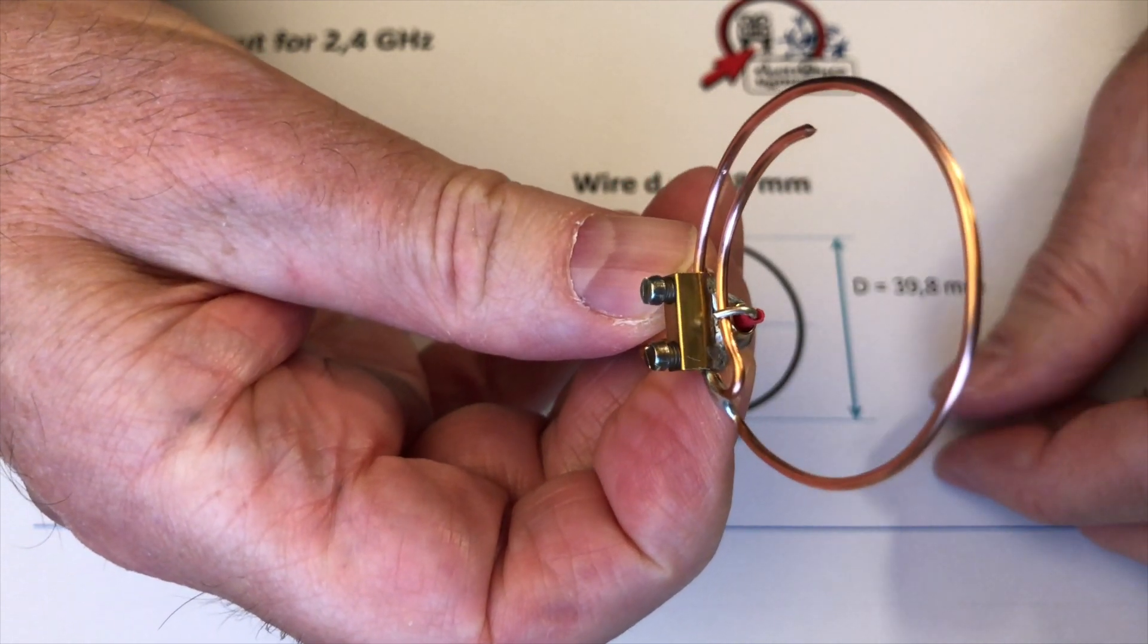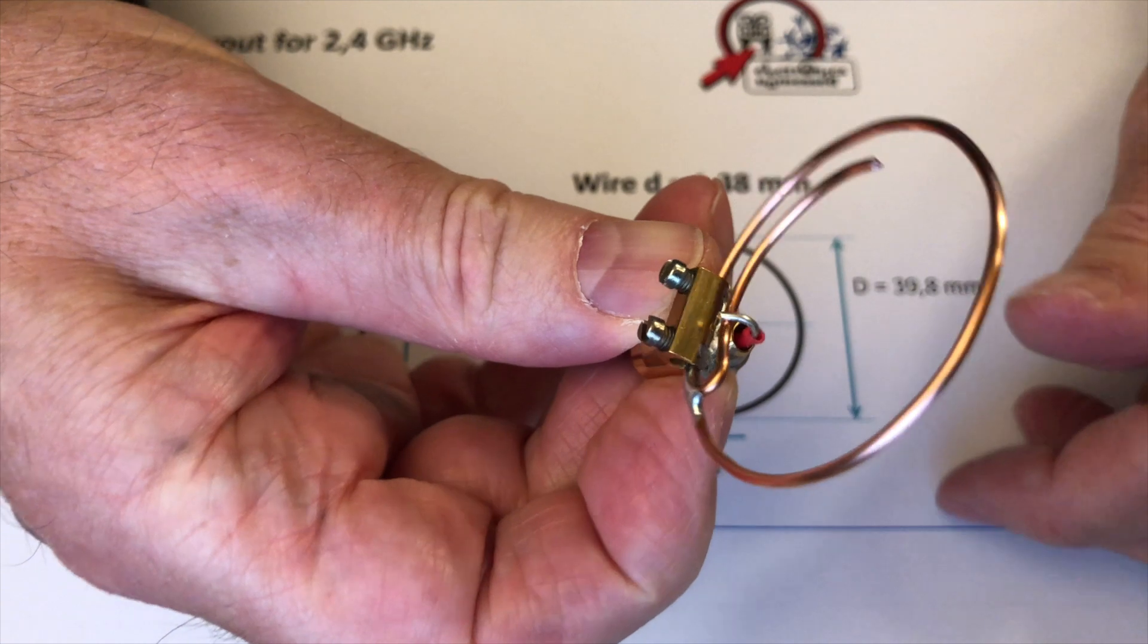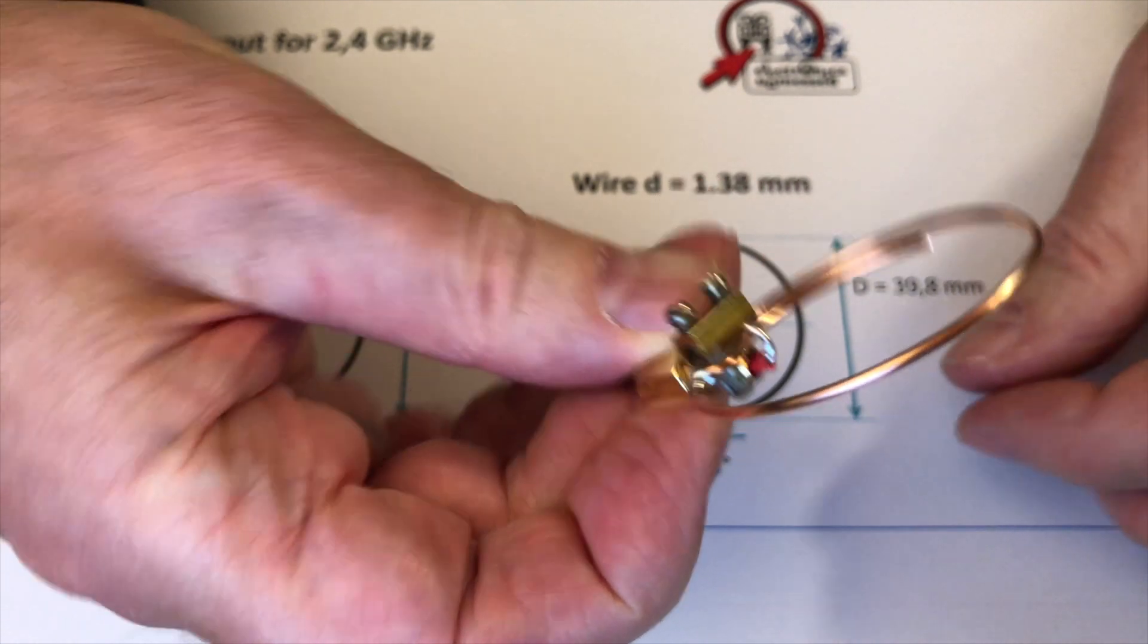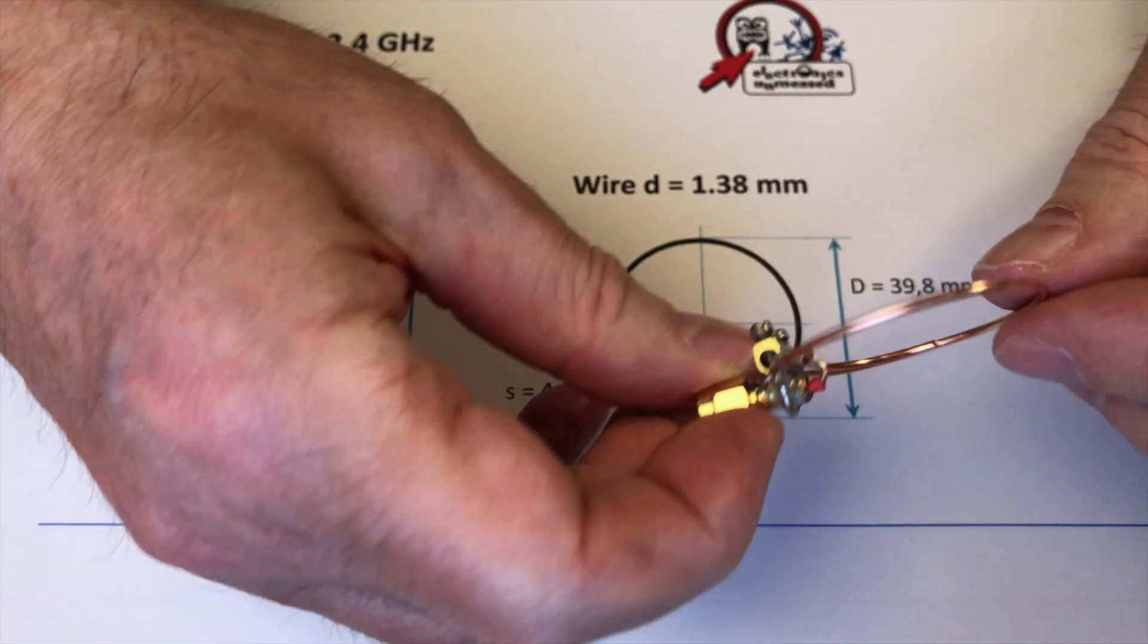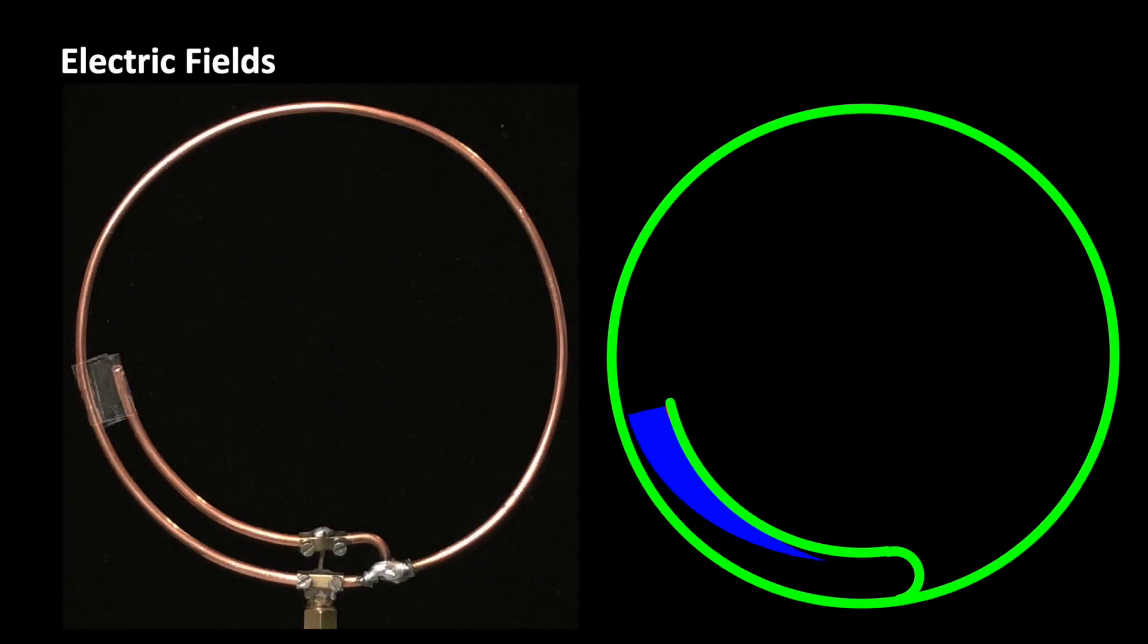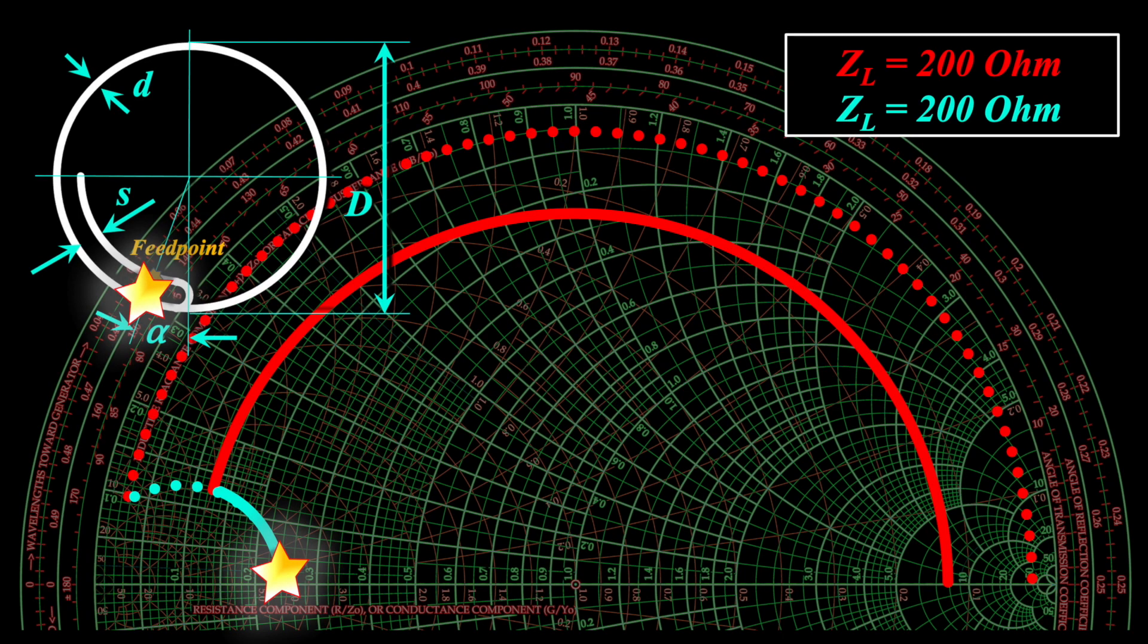An antenna principle can be understood by looking at the electric fields along the wires. First let's look at the feeding point and the antenna matching. By the way, there are also other videos on the channel where I explained the matching principle and also provided the Excel tools for it.